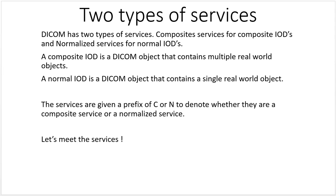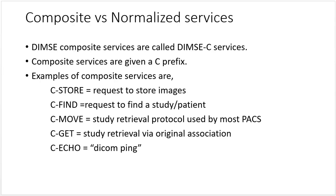Let's meet the services. DIMSE composite services are called DIMSE C-services. Composite services are given a C prefix. The composite services are: C-STORE — a request to store images; C-FIND — a request to find a study or a patient; C-MOVE — a study retrieval protocol used by most PACS; C-GET — study retrieval via the original association; and C-ECHO — which is like a DICOM ping.